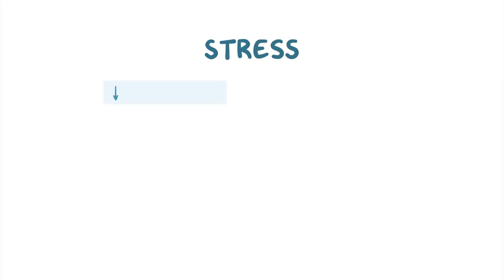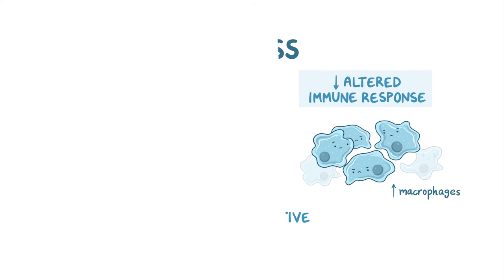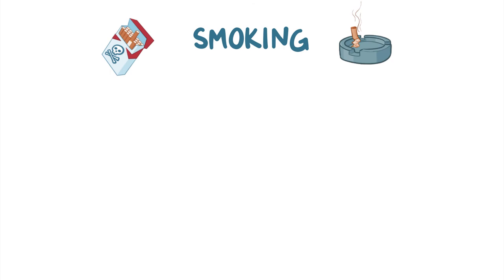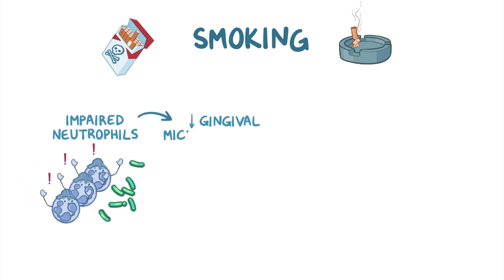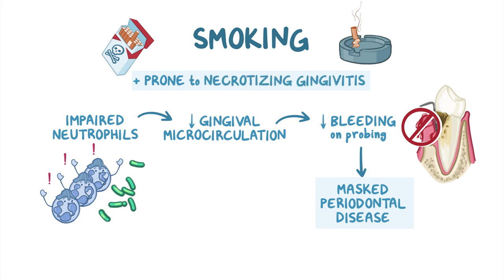Stress can also increase the risk of periodontal disease because it is associated with poorer oral hygiene and an altered immune response. Stress can alter the protective response of neutrophils, followed by upregulation of macrophages, which produce chemical mediators that eventually damage surrounding connective and bone tissue. Smoking is associated with increased incidence and severity of periodontitis. Smoking can impair neutrophil function and reduce gingival microcirculation, which can mask periodontal disease due to decreased bleeding on probing. Smokers are also more prone to necrotizing gingivitis, characterized by bleeding and ulcerations of the gingiva.